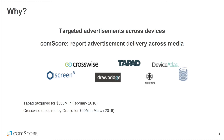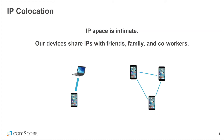Comscore, a digital analytics company, uses device graphs to report on delivery of advertisements across media. In this paper, we present an approach to build a device graph of massive scale using a simple observation.